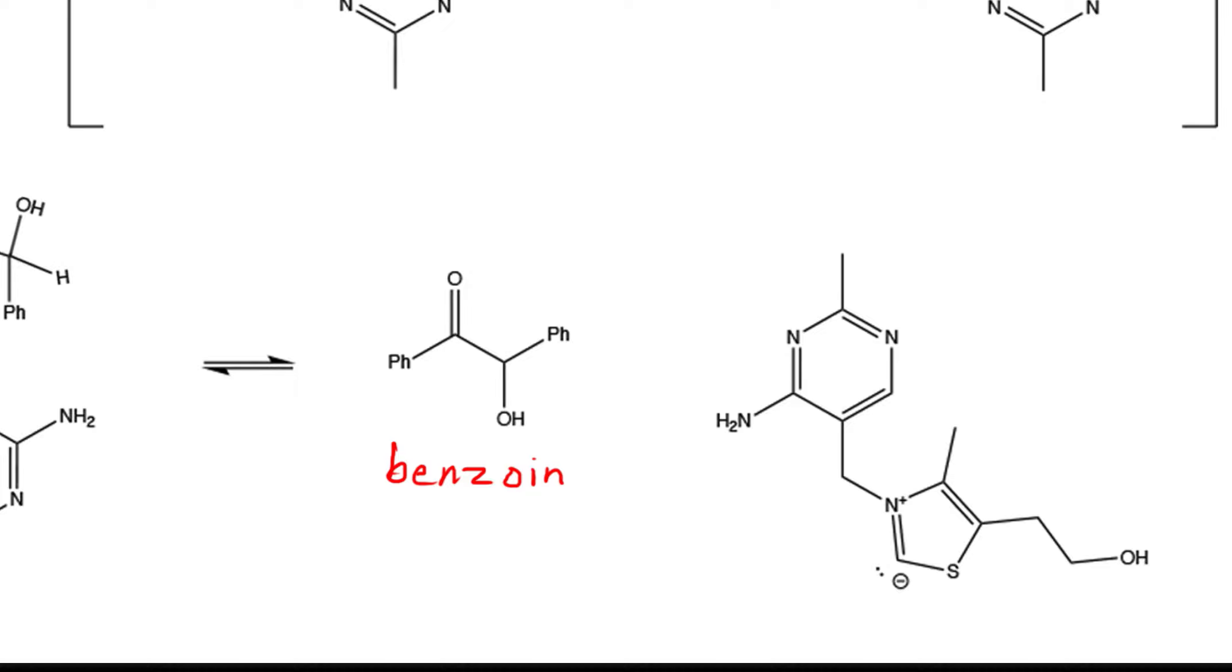Instead, we opt for the safer reagent, thiamine hydrochloride. Thiamine hydrochloride functions the same way as cyanide in that upon attaching it to benzaldehyde, it decreases the pKa value of that proton and allows us to form benzoin.